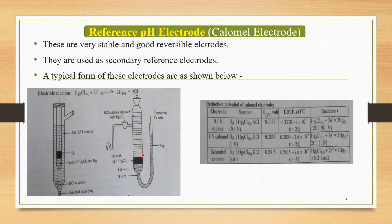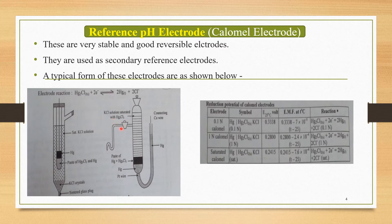The second form of this calomel electrode has a glass tube in which at the bottom there is mercury, above which there is a paste of mercury plus mercury chloride. At the bottom there is a platinum wire immersed in the glass tube. There is a side-bend tube containing mercury with a copper wire for connecting purposes. This glass tube is filled with KCl solution saturated with Hg2Cl2.